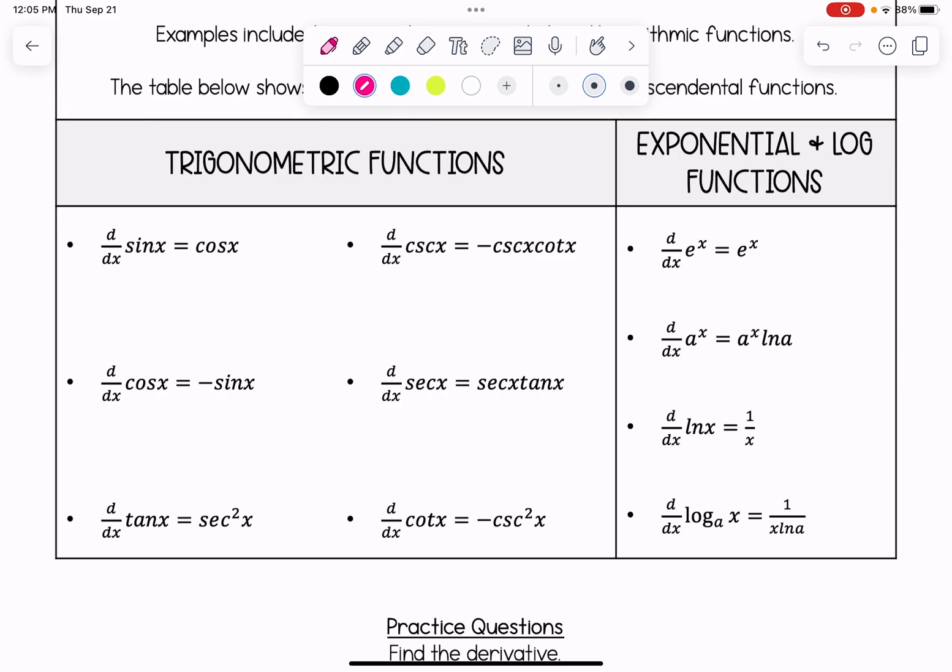And of course, with the x values in there, the derivative of cosecant is negative cosecant cotangent. Derivative of secant is secant tangent. And derivative of cotangent is negative cosecant squared.